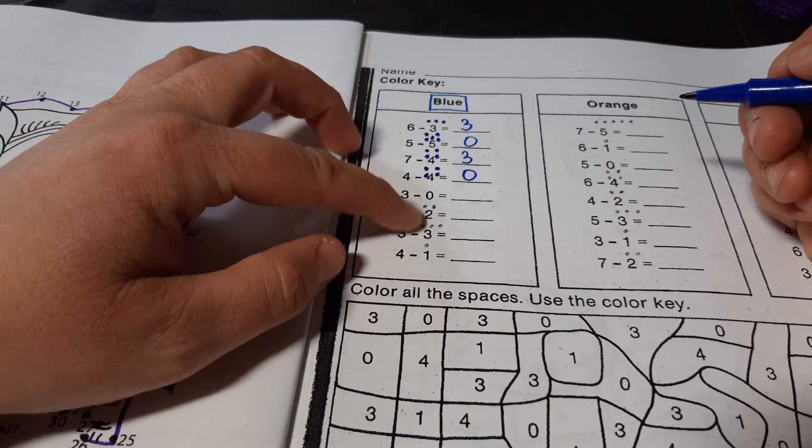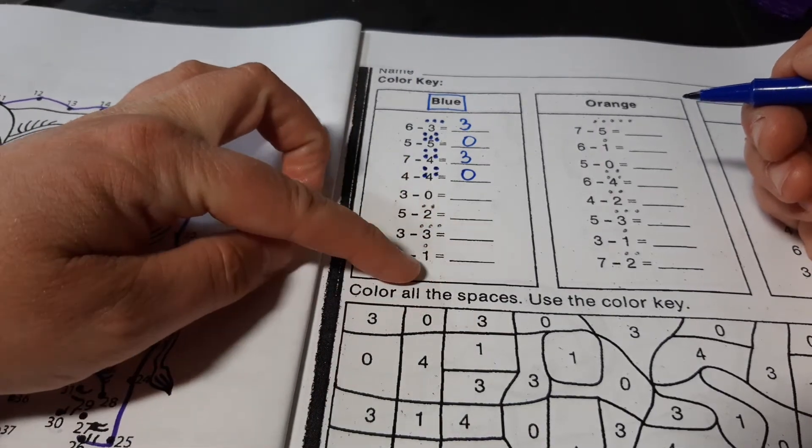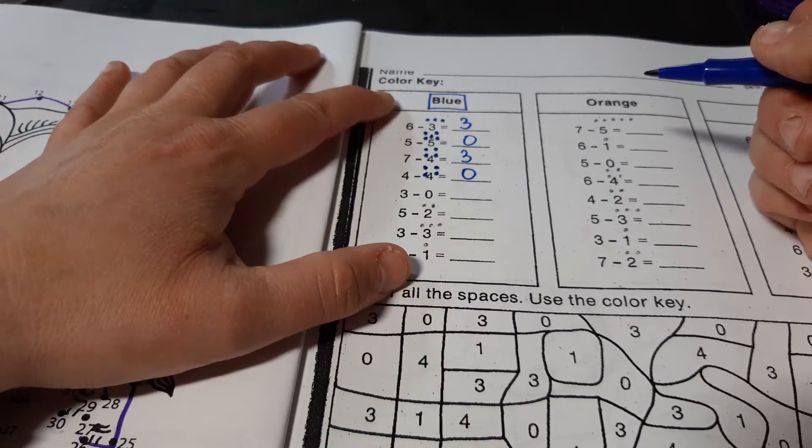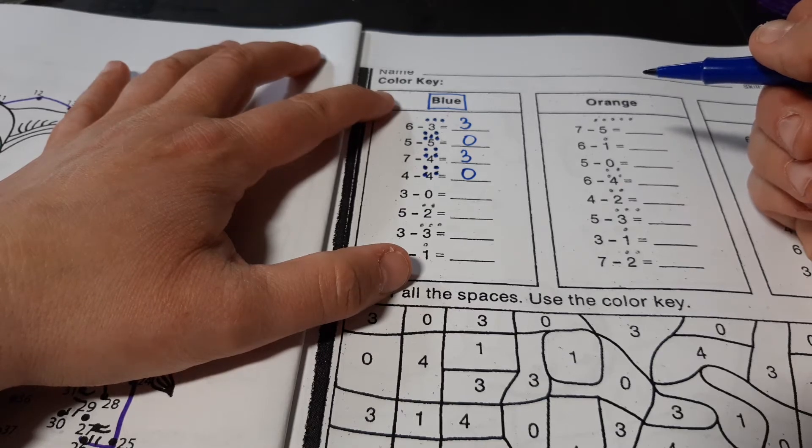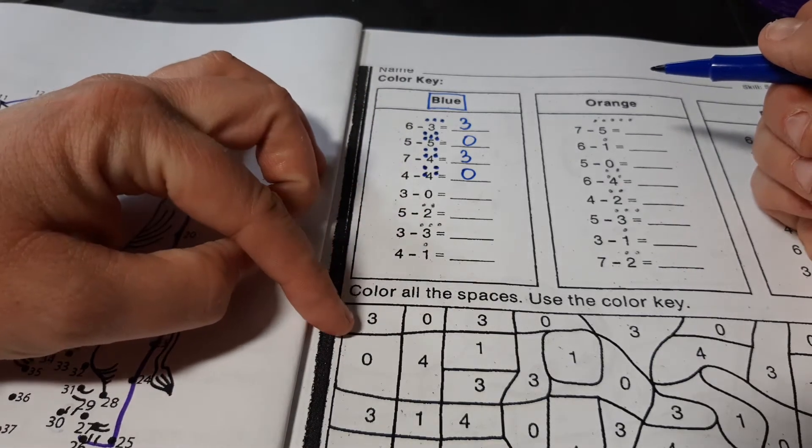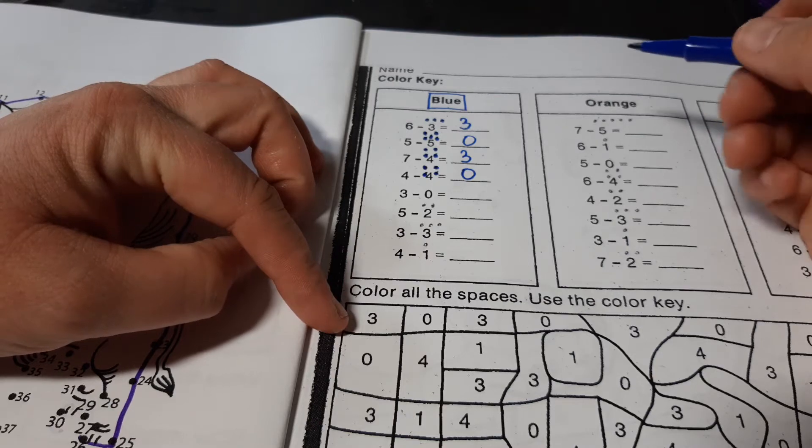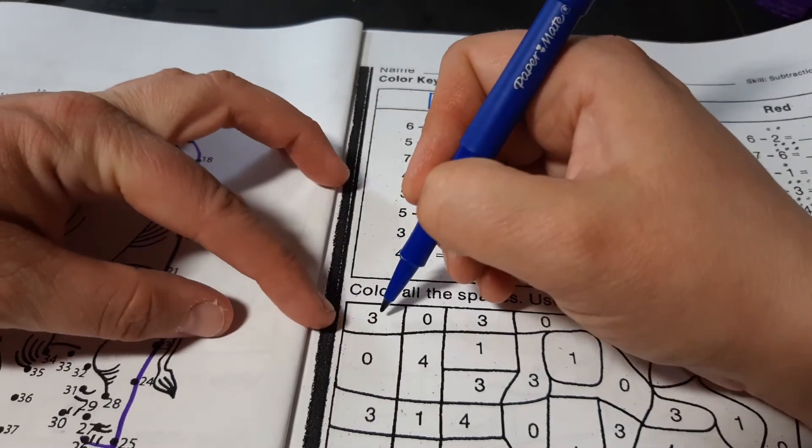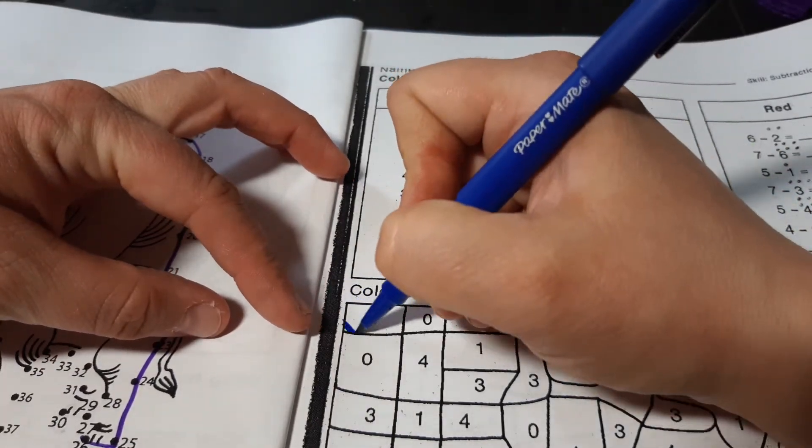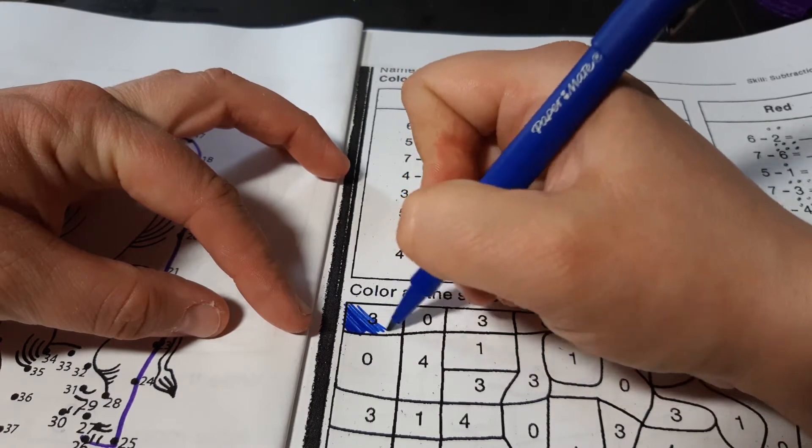I'm going to let you finish these on your own. Now, when you get done with the blue column, you're going to find the answers, colors, and then you can color it in. So, here I have a 3, so I'm going to color the 3 in blue.